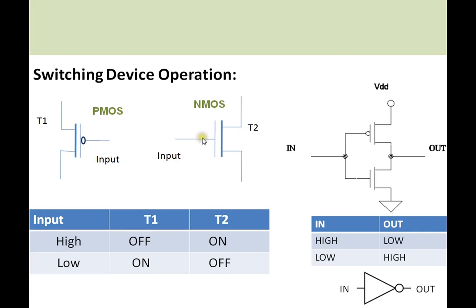For NMOS the operation is reverse: whenever the input is high the switch is on, and whenever the input is low it is off. CMOS technology — complementary metal oxide semiconductor technology — uses both PMOS and NMOS to design logic circuits. Here we can see a CMOS inverter which has both a PMOS and an NMOS switch.